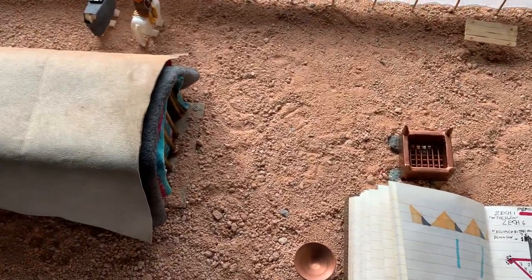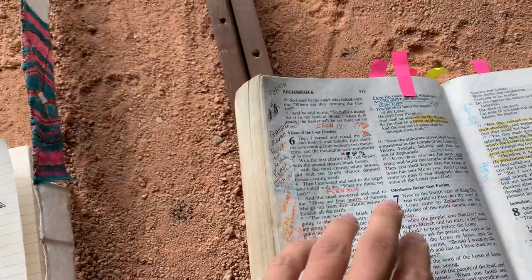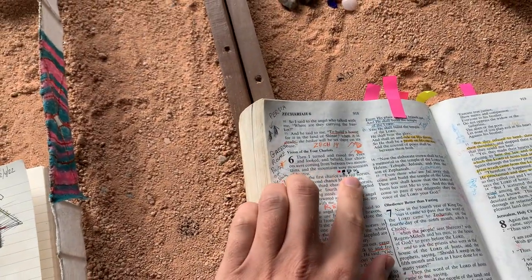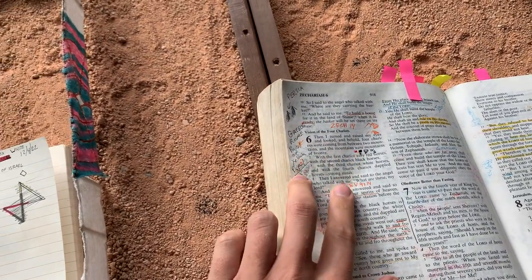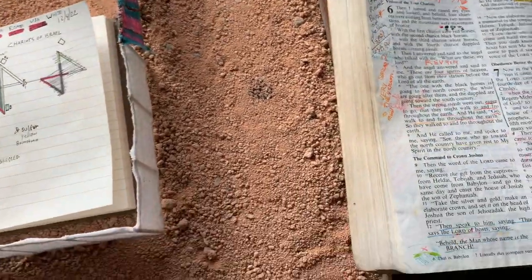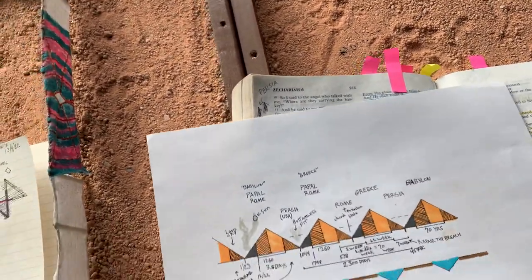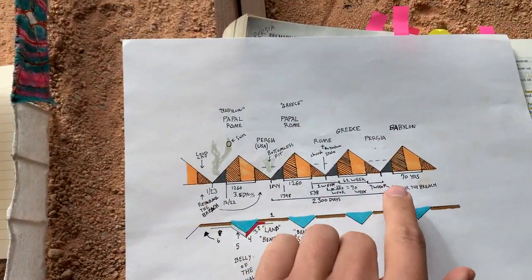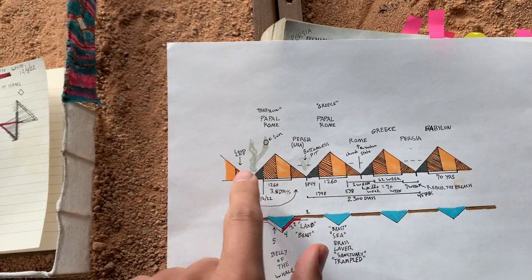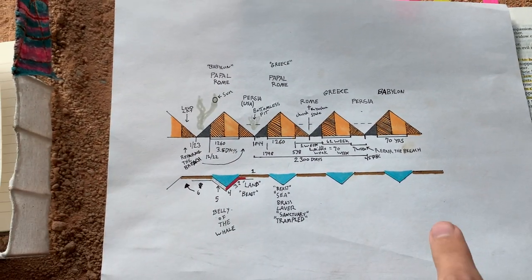All right, so today I want to talk about the four chariots, or the horsemen of Israel. You can see, primarily dealing with Zechariah, but there's more to it. So I'm going to start actually, I'll start off again with this chart. This is just another way of going over what my other videos have gone over.